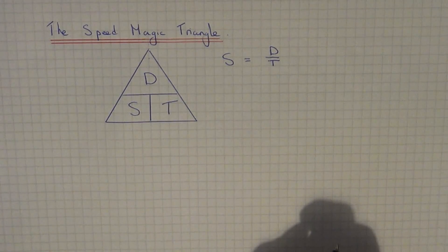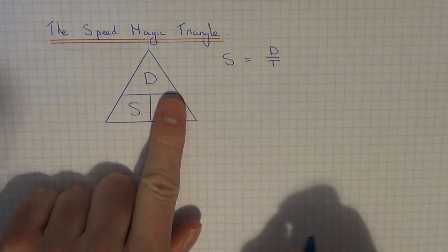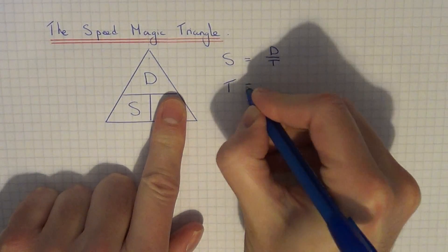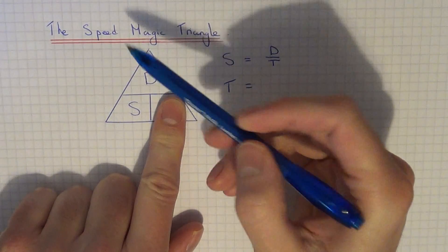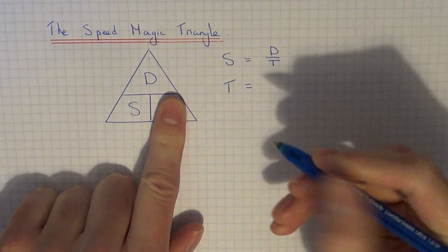If you needed to calculate the time, you'd cover up the time, and you see D is on top and the speed is underneath. So it's distance divided by speed.